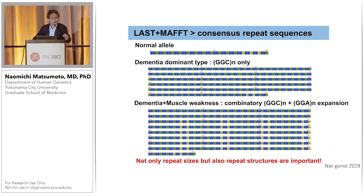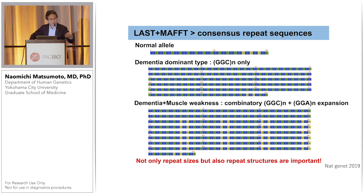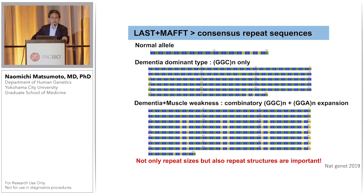The top allele is a normal allele. The second is a GGC-only repeat expansion, and the third is a combinatory GGC repeat and GGA repeat expansion. Interestingly, GGC-only repeat expansion shows mainly a dementia-dominant type in NIID. However, the combinatory expansion type is only found in the dementia plus muscle weakness type. This tells us that repeat content is very important in explaining the phenotype, even in repeat expansion diseases. This is why we have to use long-read sequencers to detect the contents of a repeat.